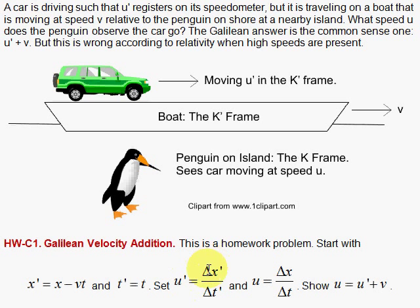And u' equals delta x' over delta t' is the definition of the speed in the prime frame. And from the penguin's frame, it's delta x over delta t, the speed that the penguin measures. We want to show that u, the penguin's measurement, is equal to u' plus v, the 80 plus the 20.